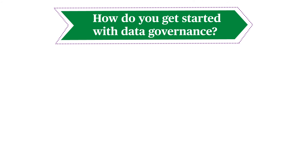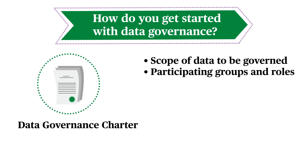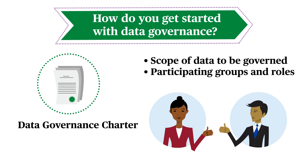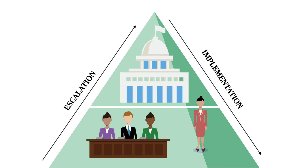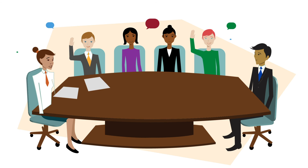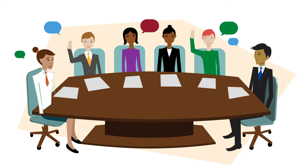How do you get started with data governance? First, establish a data governance charter or policy that defines the purpose of the data governance program. The charter describes the scope of data to be governed and the groups and roles that will participate. Next, establish the data governance groups and identify who will be involved in them. Designate a data governance coordinator with the authority to set priorities, coordinate with the groups and representatives, and ensure that the work continues over time. Then, identify and begin addressing high priority data quality issues and the policies and processes needed for managing data. This will show stakeholders the value of data governance.